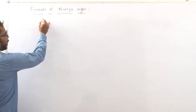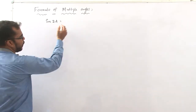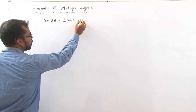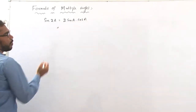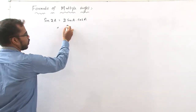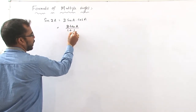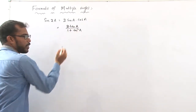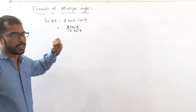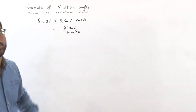The first formula is sin 2a. So sin 2a equals 2 sin a into cos a. This is one form — a multiplication form. Another formula is 2 tan a by 1 plus tan square a. So there are two formulas for sin 2a: one is 2 sin a into cos a, and the other is the division form.